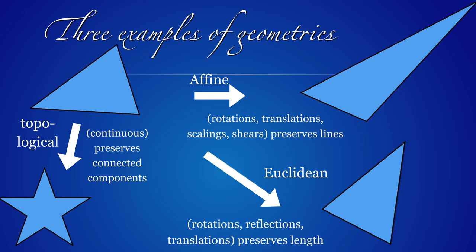In Euclidean geometry, one can only rotate, translate and reflect an object, and the lengths and angles are preserved.